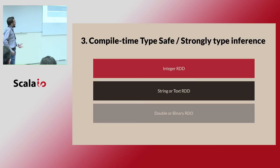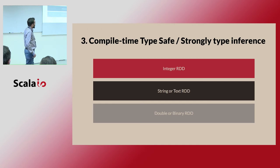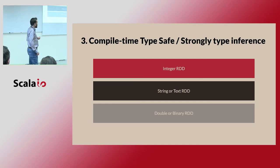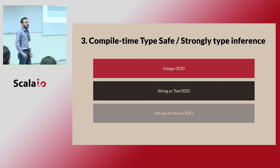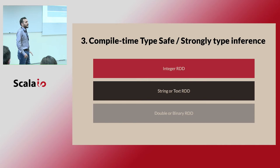RDDs provide compile-time type safety and strongly typed inference. You can create an RDD of integer, RDD of string and text, RDD of double or binary — whatever primitive data type you need.